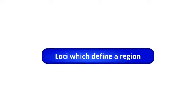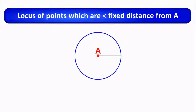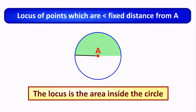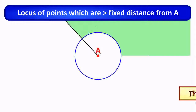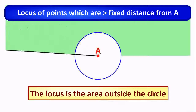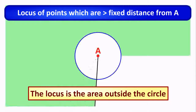Loci can also define a region. The locus of points less than a fixed distance from a point A is the area inside the circle. The locus of points greater than a fixed distance from A is the area outside the circle.